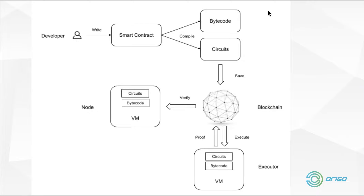The pipeline gets a little change. Usually for normal EVM, it just needs to use the same armor to actually execute and verify. But for Origo, we need to separate the steps, because our execution for private transactions needs to be done in the executor, and then the on-chain part will only verify the proofs. So our virtual machine needs to support those kinds of operation codes.